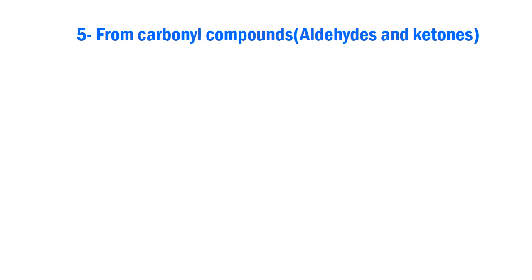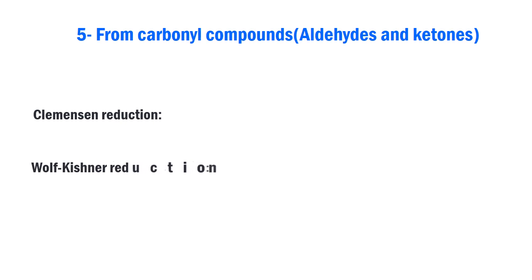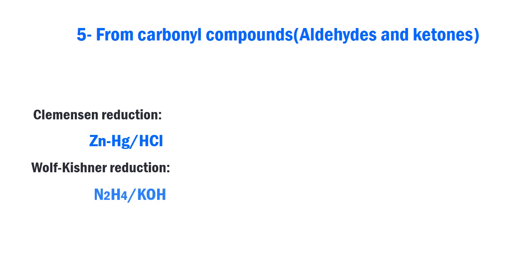The carbonyl groups of aldehydes and ketones are reduced to methylene or methyl groups respectively by either Clemmensen or Wolff-Kishner reduction. In the Clemmensen reaction, a ketone is reduced to an alkane using zinc amalgam and hydrochloric acid, whereas in the Wolff-Kishner reduction, an aldehyde or ketone is reduced to an alkane with hydrazine in the presence of potassium hydroxide.